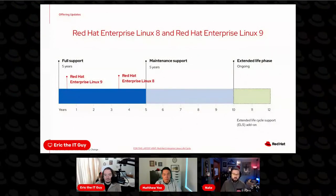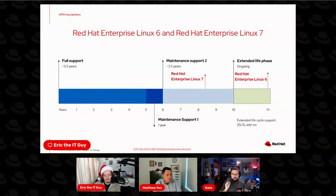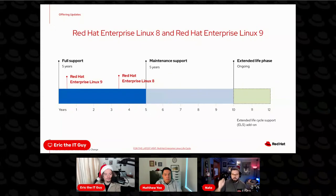With RHEL 8 and now 9, we're sticking to a pretty rigid release cycle, which means dates are predictable. Two important dates to have on your radar as an administrator: RHEL 8's first maintenance phase ends in May 2024 — at that point you'll want to start looking at moving from 8 to 9. And RHEL 7, currently in its extended maintenance phase, will be end of life in June 2024. Jot those down, put them in your calendars, and start telling your boss you need to move to newer versions of RHEL now.